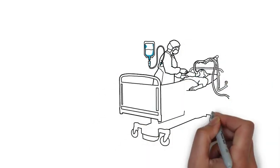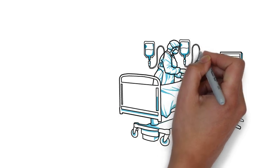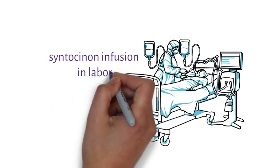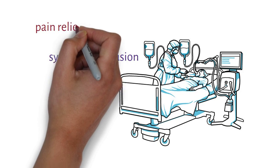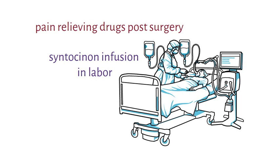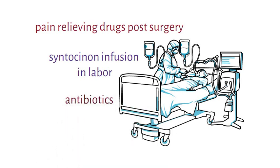Another area where errors can happen is when drugs are given in solutions intravenously. Administering the wrong volume of a drug or the wrong percentage of drug in the solution may have severe consequences for patient safety. Syntocinon is frequently used in the labor room and the strength of the solution will change according to the patient's situation. Providers responsible for administering drugs in solution need training to understand the concentration expressed on the drug vial and the method for calculating the drug concentration, such as when using pain relieving drugs after surgery.